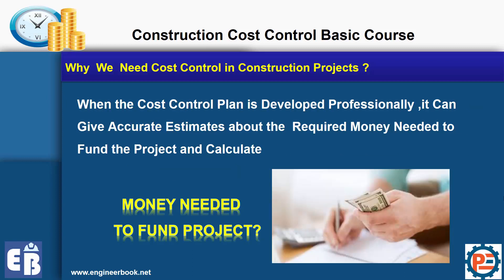One more thing cost control can do for a construction project: it can tell the estimated funds required to finance the project. In any traditional construction project, you execute the works, submit your payment certificate, get paid one month later, and in that period you are executing new works. So if you implement the actual costs to your time schedule, you will know how much you have to spend and when you will receive payment, and from this you can easily find how much your company needs in order to execute the project.